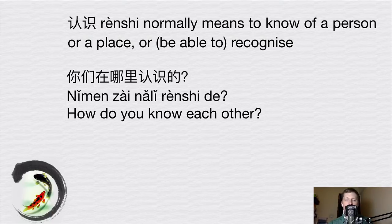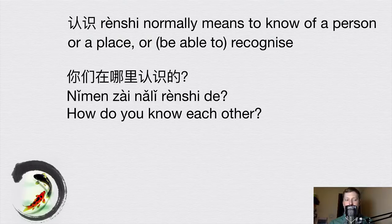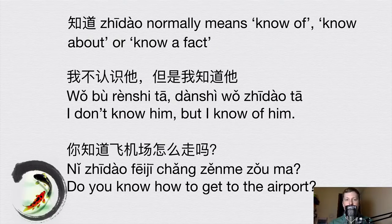Another example: 你们在哪里认识的 — 'How do you know each other?' Literally: 'You (plural), at where, know' — and then we have 的 on the end, which is a grammatical particle. In this sentence, 认识 means to know a person. When we're talking about a person, getting to know them or knowing them well, we use 认识. The other word, 知道, normally means to know something, to know about something, or to know a fact.